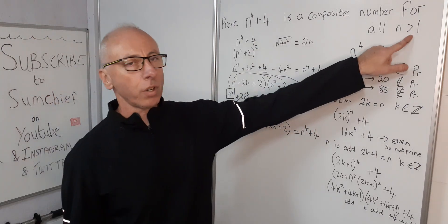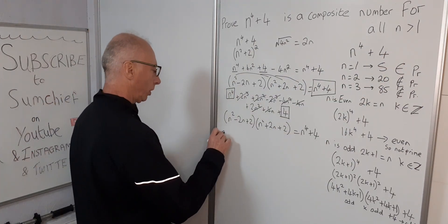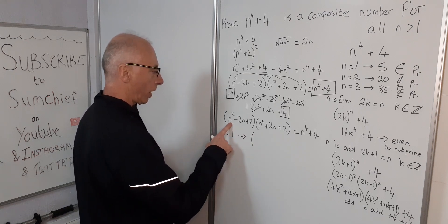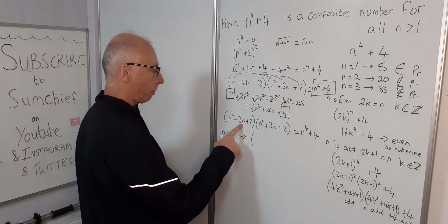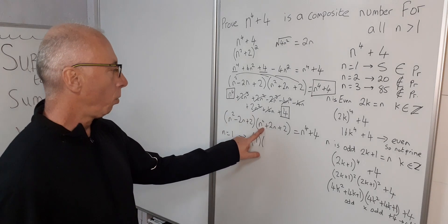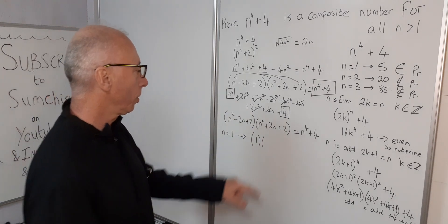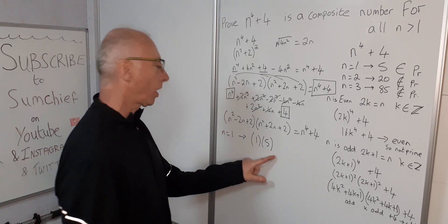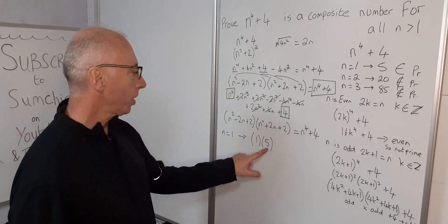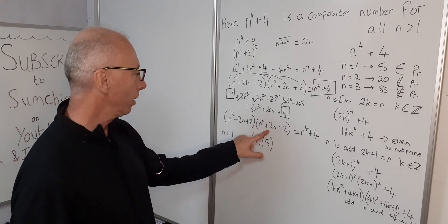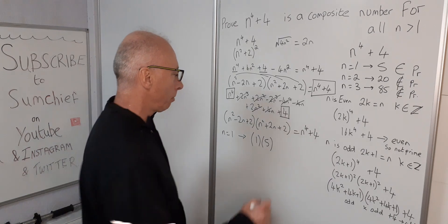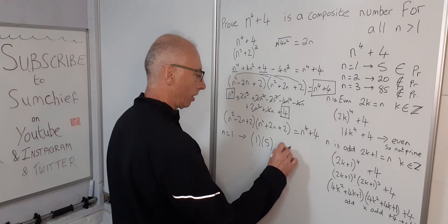Let's verify for n equals 1. We get 1 squared minus 2 plus 2, which is 1, times 1 squared plus 2 plus 2, which is 5. So 1 times 5 equals 5, which is correct. But the factors are 1 and 5, so we can see that is a prime number — which is why we exclude n equals 1.